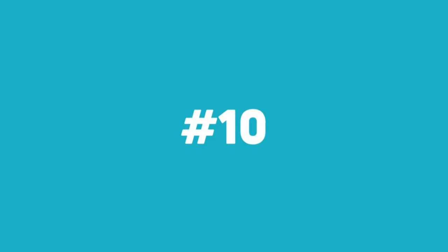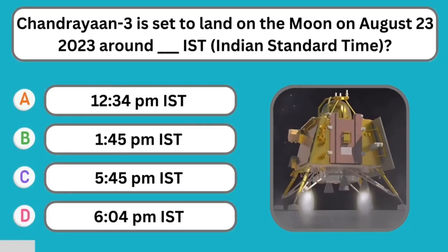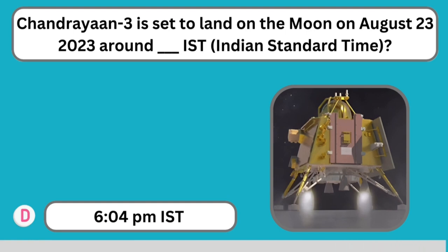Question number ten: Chandrayaan 3 landed on the moon on August 23, 2023. At what time IST did this occur? The correct answer is 6:04 PM IST.